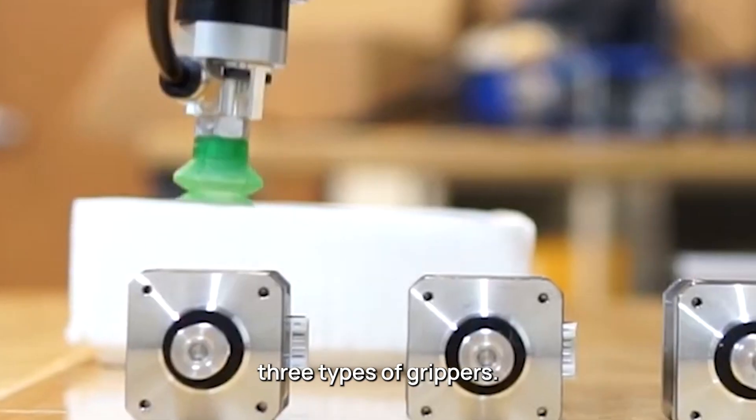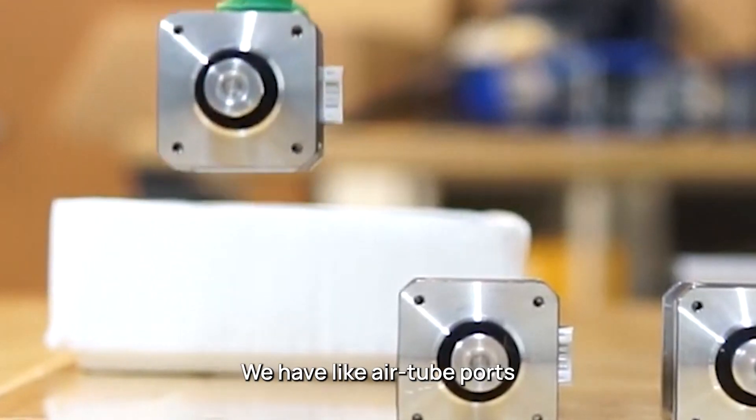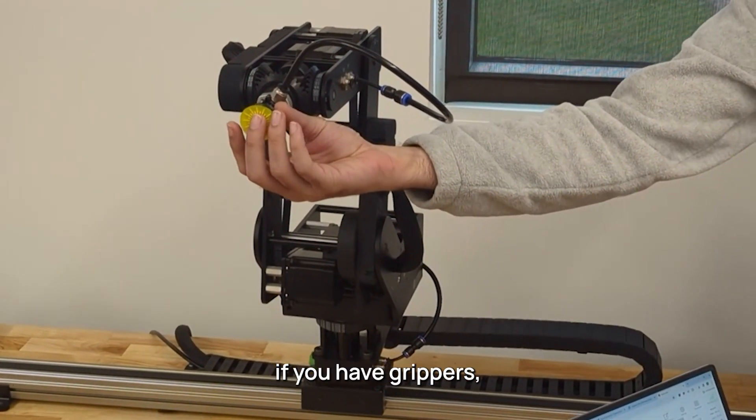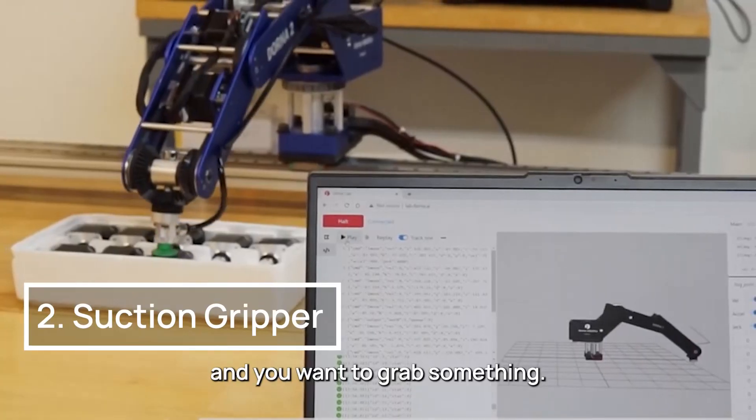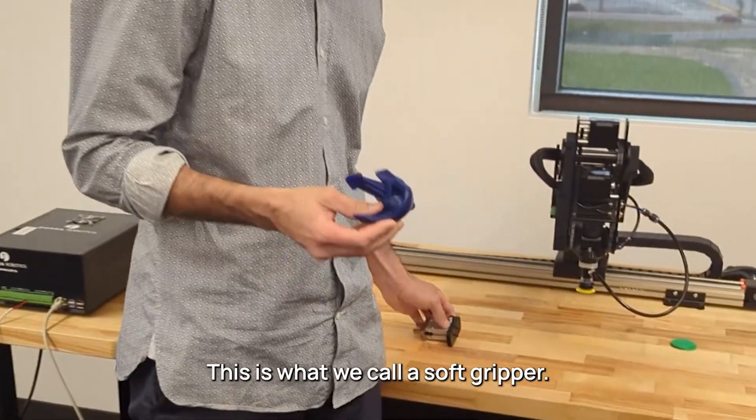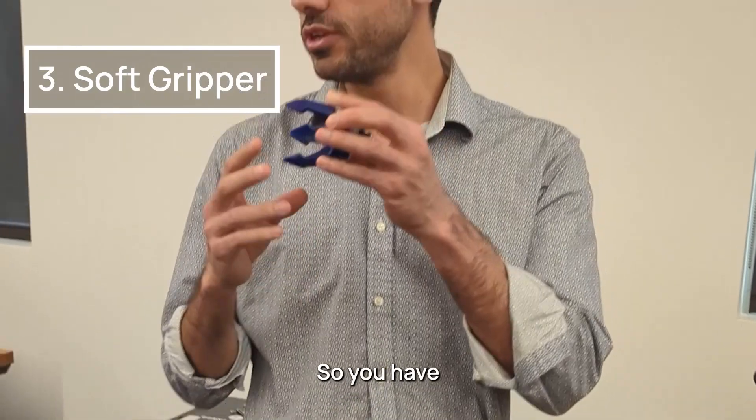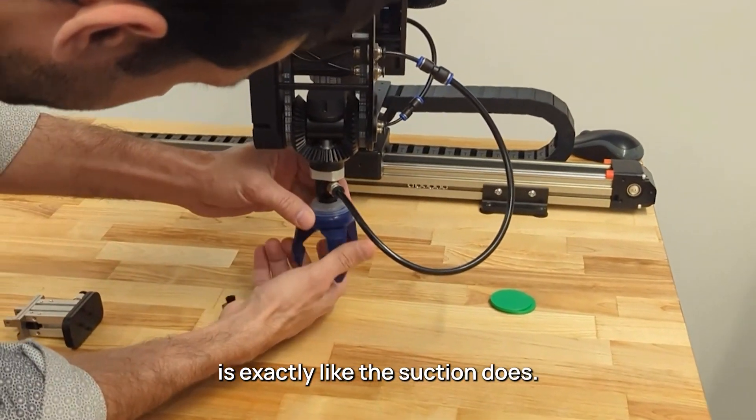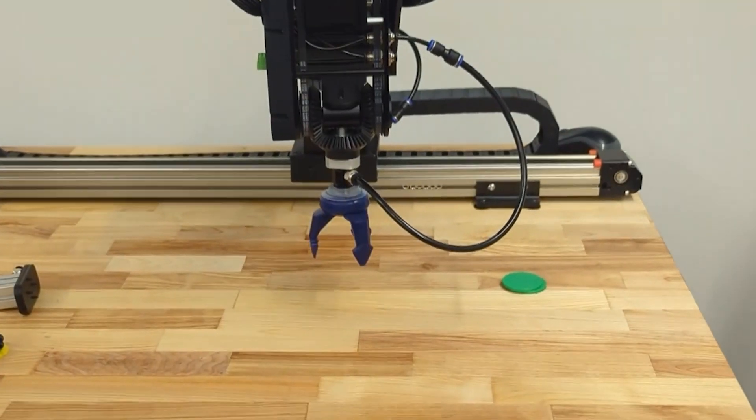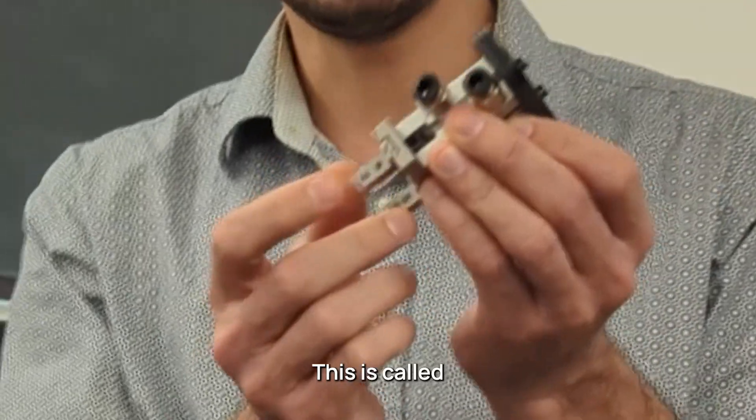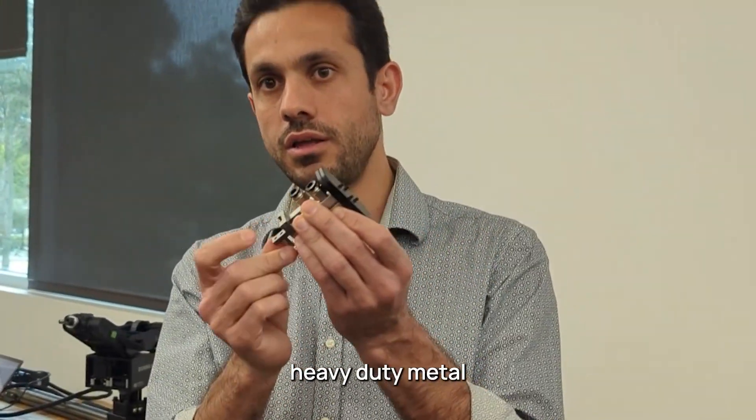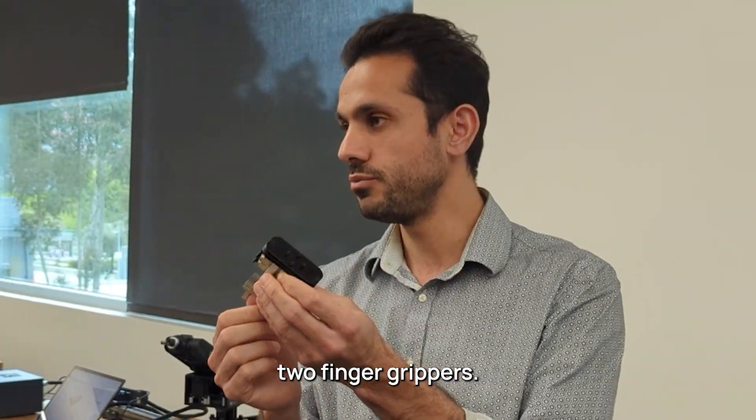We offer these three kinds of grippers. We have air tube ports around the robot so you can grab the gripper, like the suction gripper where you grab something. This one they call the soft gripper. It has a very soft texture, but the way it works is with suction. This is called the relic gripper. These are heavy metal two-finger grippers.